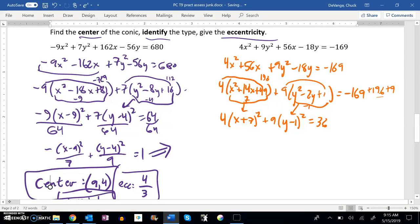Divide out that 36 to get it equal to 1. That's going to leave me a 9 in the denominator here. That's going to leave me a 4 in the denominator here, just reducing that fraction.